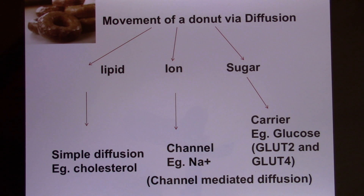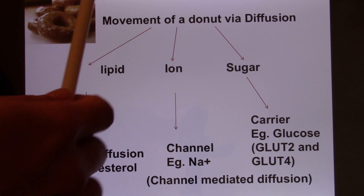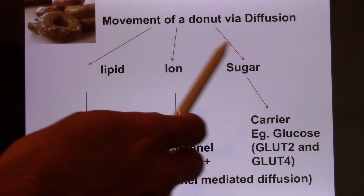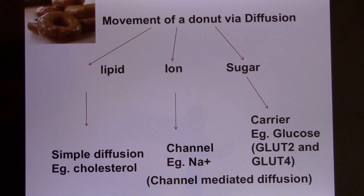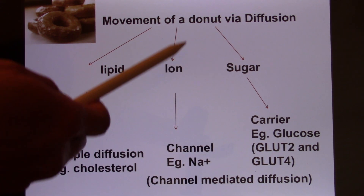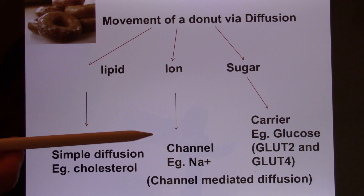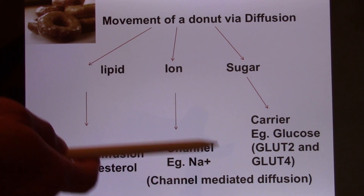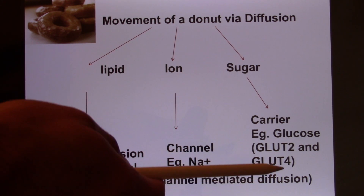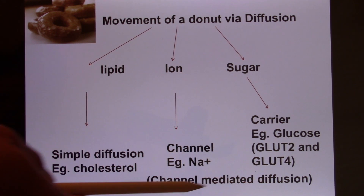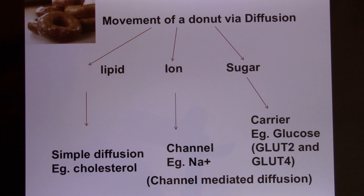The other two parts — ions and sugars — are different. Ions are small but they are charged, so they need ion channels. This is channel-mediated facilitated diffusion. You need ion channels to make ions go through the membrane.